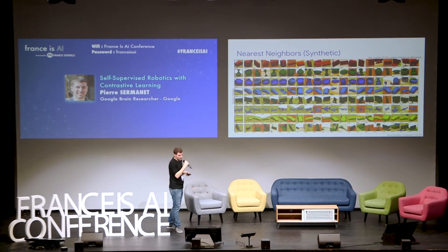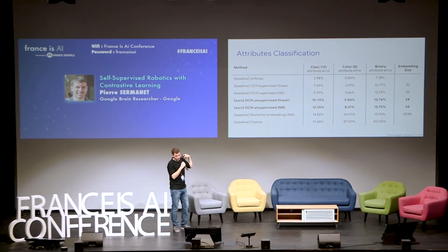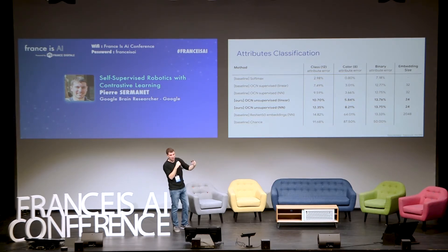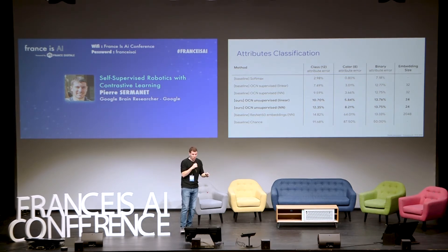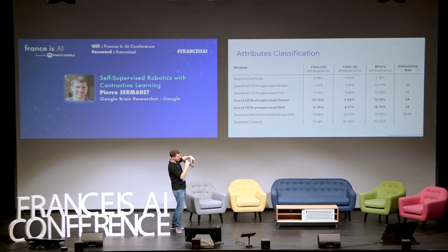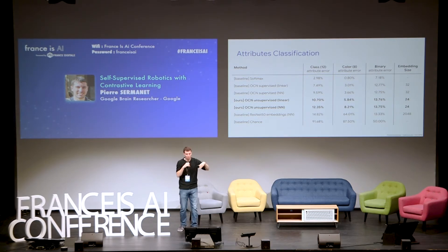Same results hold for the synthetic dataset. We have error rates for attribute classification — class, color, and binary attributes like whether an object is a container, has buttons, or has wheels. We use fully supervised models as lower bounds on error, and ImageNet pre-training as an upper bound. We do much better than the upper bound error, and we're not far behind the lower bound error, even though we don't use any labels — which is kind of surprising.